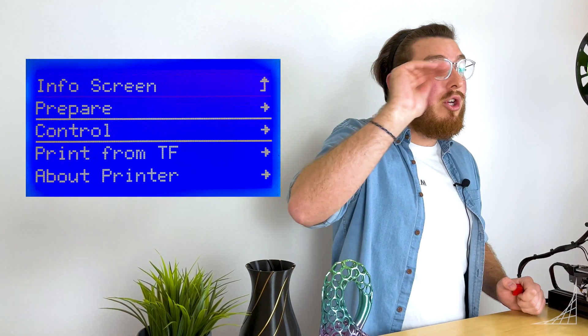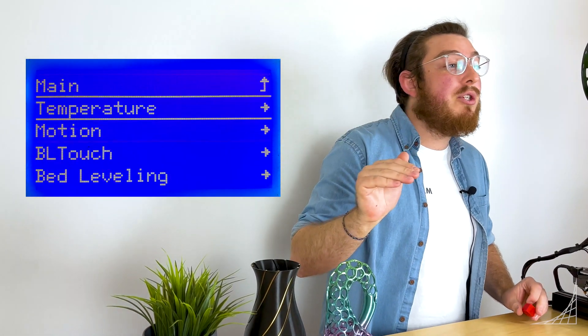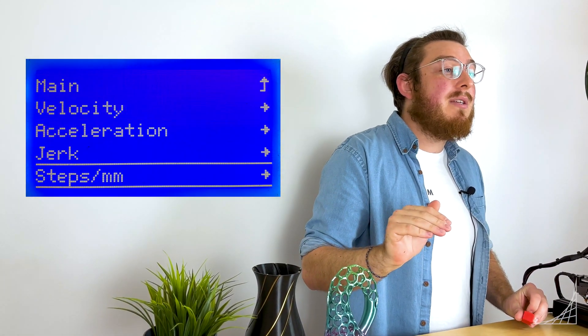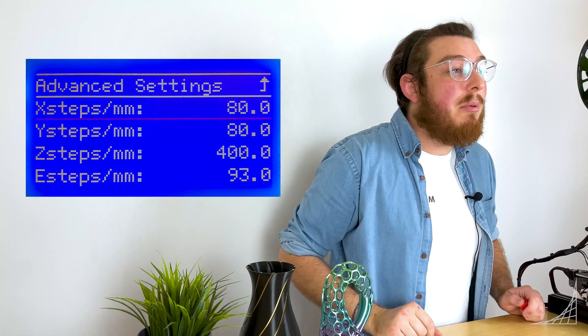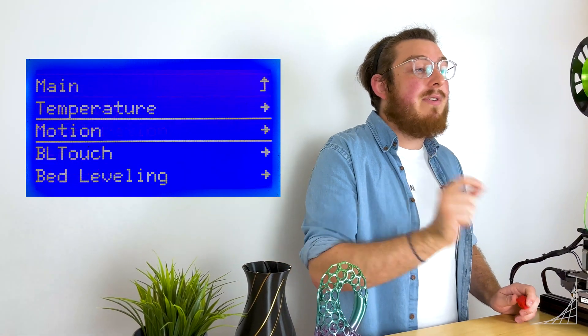You're going to go into control, motion, steps per millimeter, and then you can click on all of the axes and change it. Then you can go back a couple pages and click save settings.